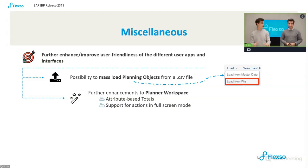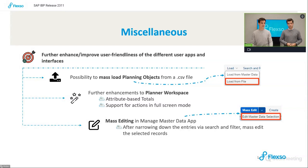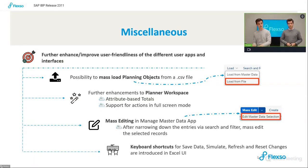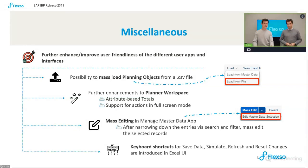In the improved full screen mode, you can now save and simulate your data, and you even have access to the sidebar — so you can quickly add a key figure or change your time periods, all within full screen mode. Third, a quality-of-life improvement: in the Manage Master Data app you can now do mass editing for a certain selection. Finally, SAP provides keyboard shortcuts to save data, simulate, refresh, and reset changes, available in both the Excel UI and the Planner Workspace full screen mode.